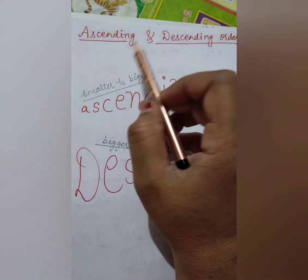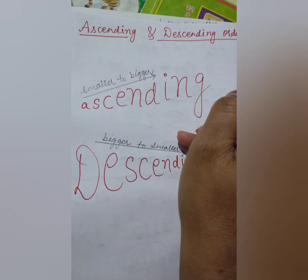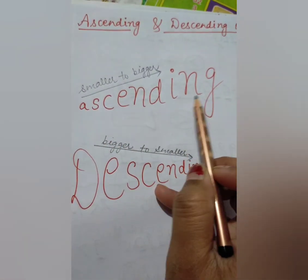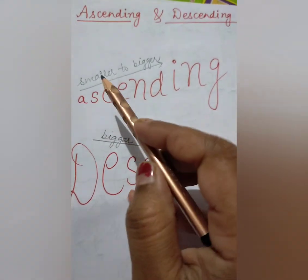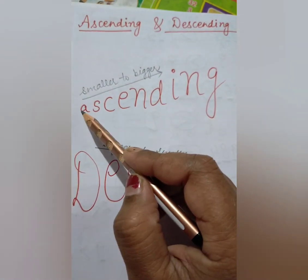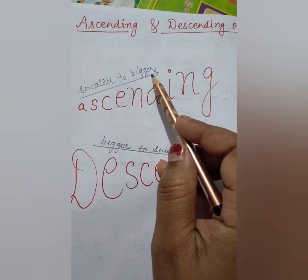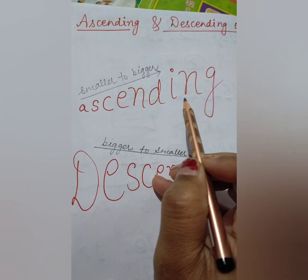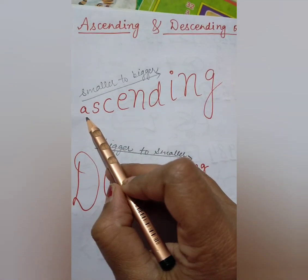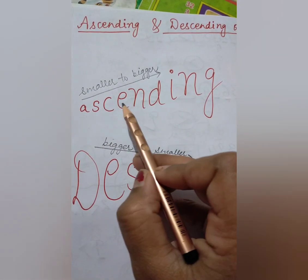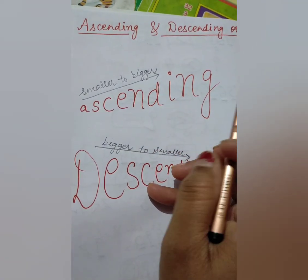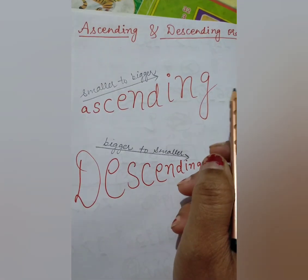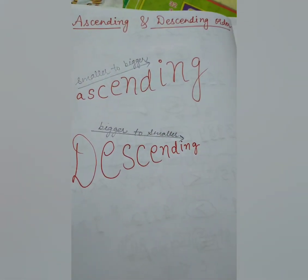Let me explain firstly what is ascending order. Ascending order means starting from the smaller number and moving towards the bigger number. When we arrange the numbers such that the smaller number is written first and after that the bigger numbers are written, that arrangement is called ascending order.